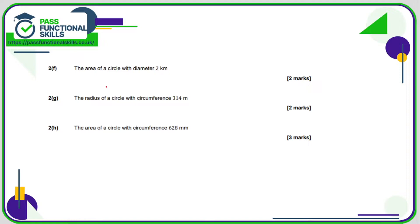For F, we need to work out the area where the diameter is 2 kilometres. The formula is pi r squared, so we need the radius. The radius is half the diameter, so it's 3.14 times 1 times 1, which is simply 3.14 — and that is in square kilometres, because it's an area we're calculating.